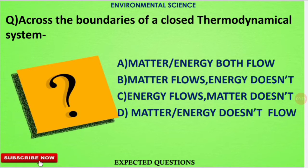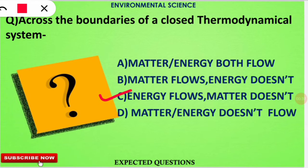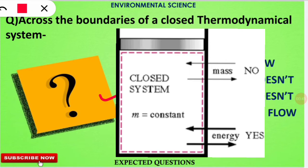Aaj ka pehla question hai: across the boundaries of a closed thermodynamical system, what kind of flow is seen? The correct option is C — in a thermodynamically closed system, energy flows but matter doesn't. Most of the time we see that energy in the form of heat flows from one boundary to another, but the matter is contained.